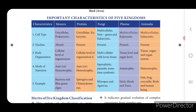For nucleus: prokaryotic means nucleus absent, eukaryotic means nucleus present. Nucleus is absent in Monera; in the other four kingdoms nucleus is present. For body organization: Monera has cellular level; Protista has cellular level; Fungi has multicellular with loose tissue; Plantae has tissue level and organ level; Animalia has tissue, organ and organ system like human beings.